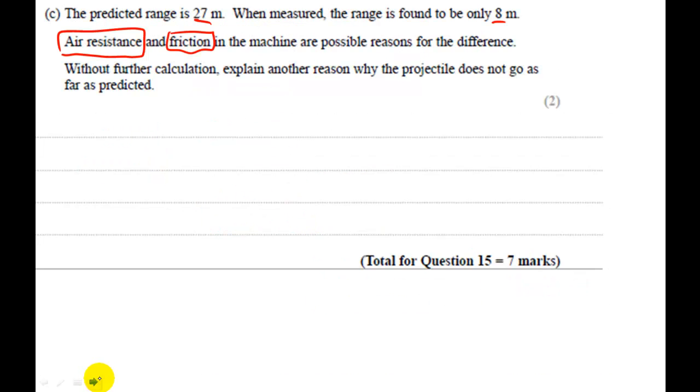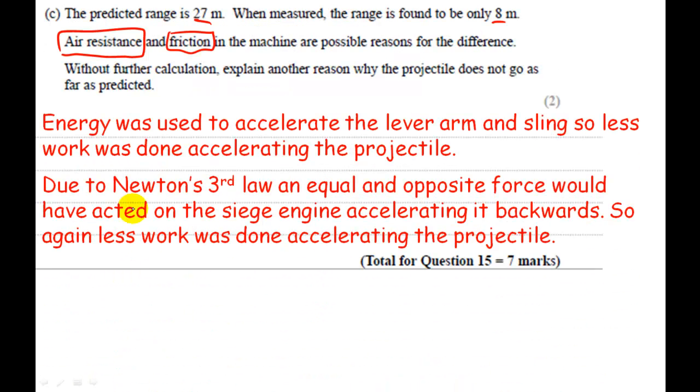So you could also say that, due to Newton's third law, an equal and opposite force would have acted on the siege engine, accelerating it backwards, so again, less work was done accelerating the projectile, or less energy was available to accelerate the projectile.